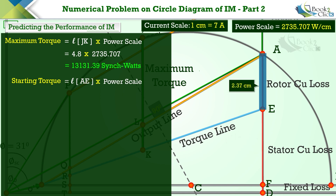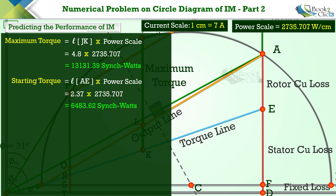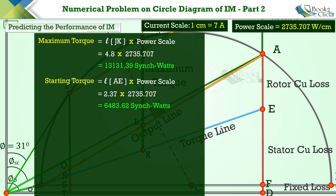To determine the starting torque of this motor, multiply the length of line AE by the power scale value. The length of line AE is 2.37 centimeters, and hence the starting torque is 6,483.62 synchronous watts.